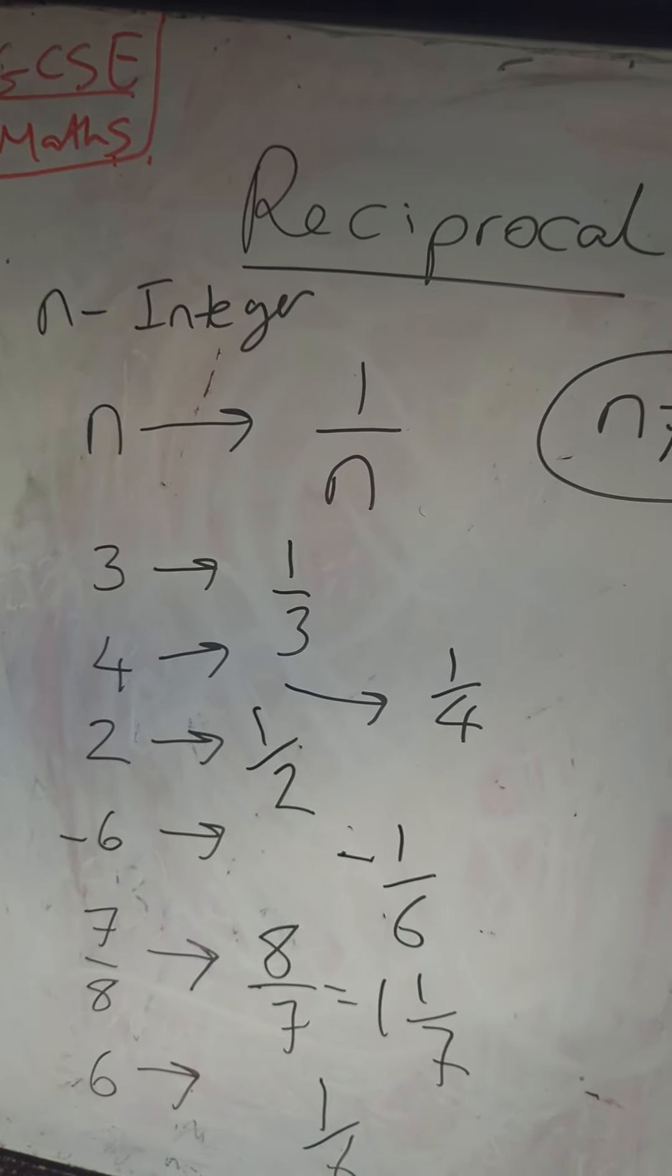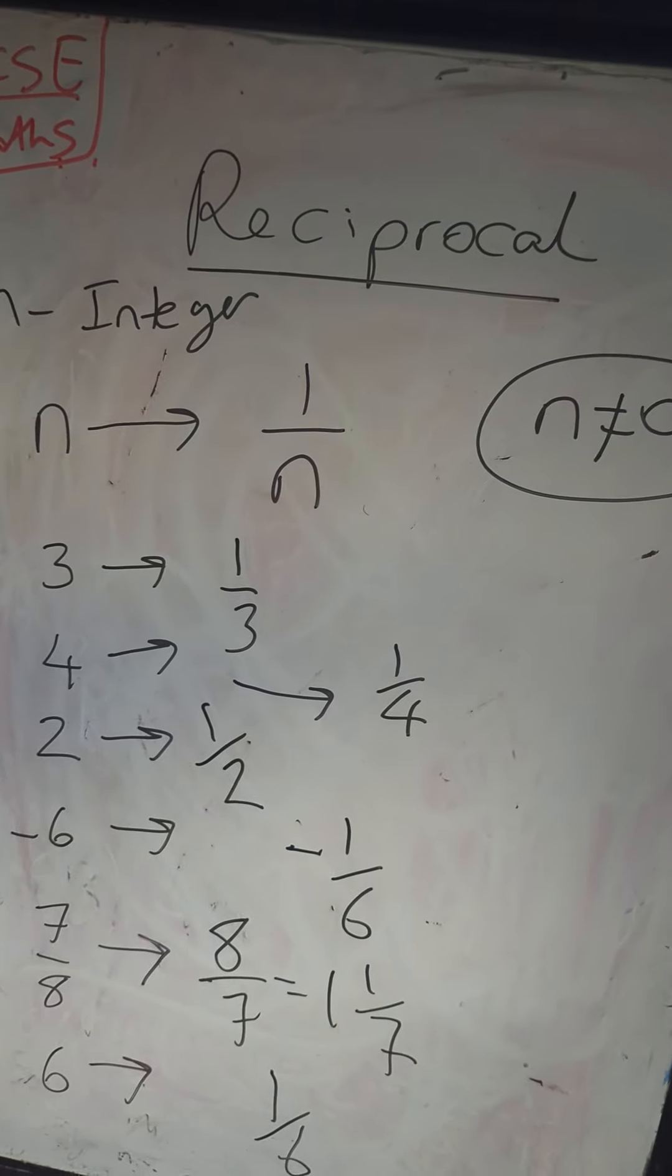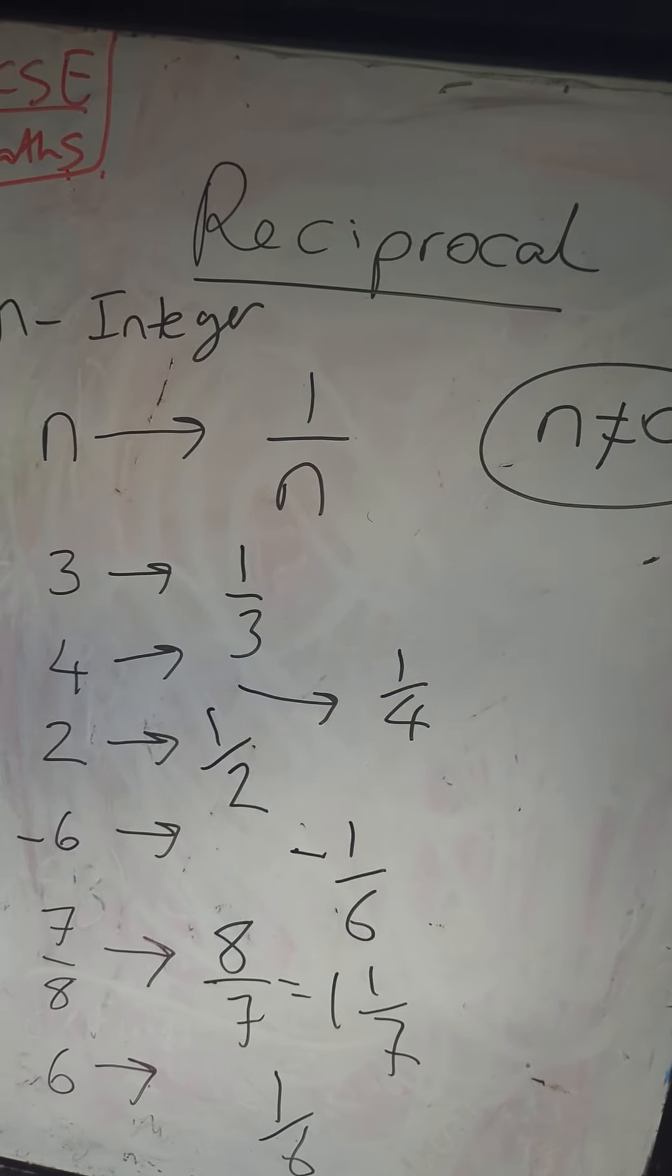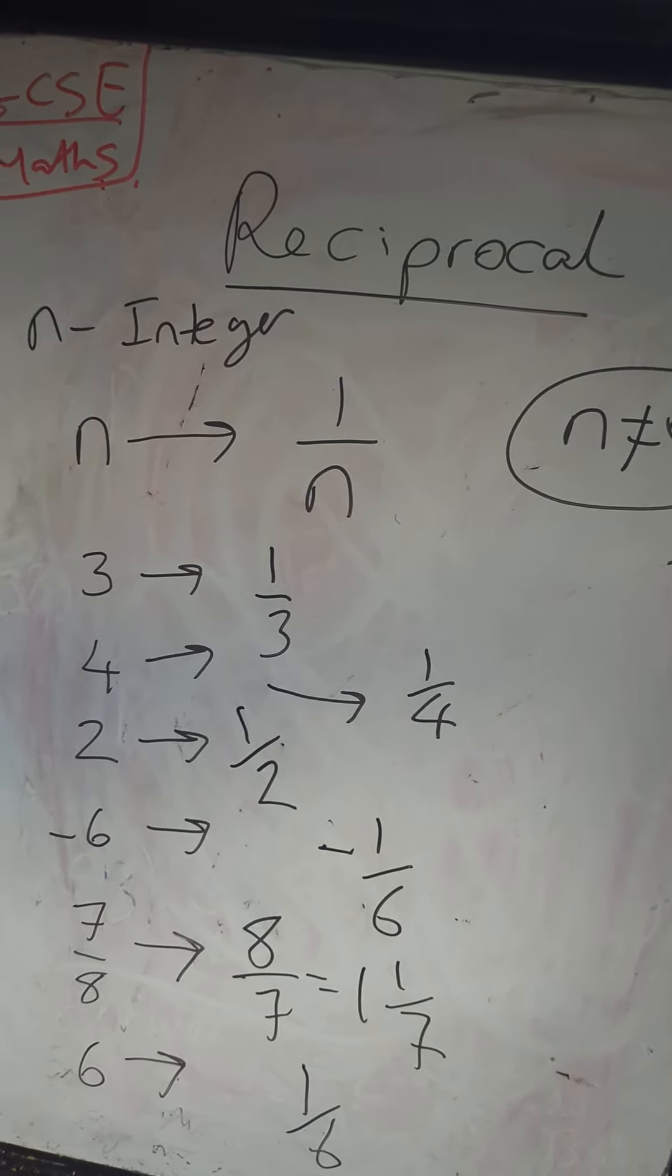Now the only exception to this is that n cannot equal zero, because zero is the only number where I cannot find the reciprocal. I cannot do 1/0 or one divided by zero because that is undefined.